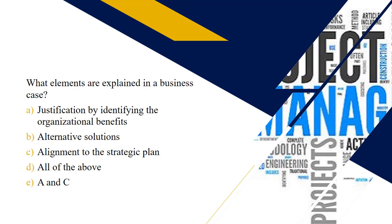Next question: what elements are explained in a business case? Hopefully you didn't get tricked and you chose choice D — all of the above. The business case is a written document or report that helps executive management and key stakeholders determine the benefits and rewards of a specific project. The business case can include such things as justification, alternative solutions, as well as alignment to the overall strategic plan of the organization.